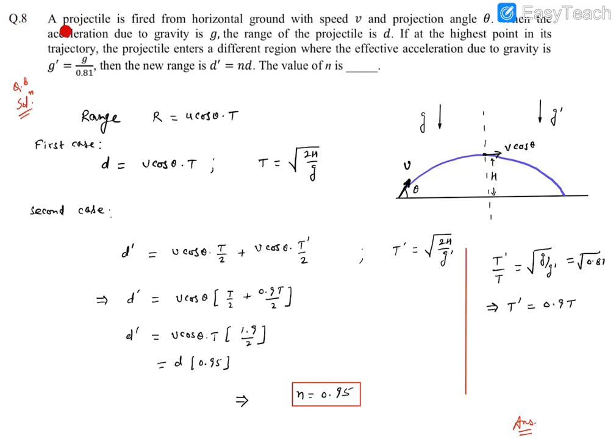Here's question number 8. It says a projectile is fired from horizontal ground with speed v and projection angle theta. When the acceleration due to gravity is g, the range of the projectile is d.